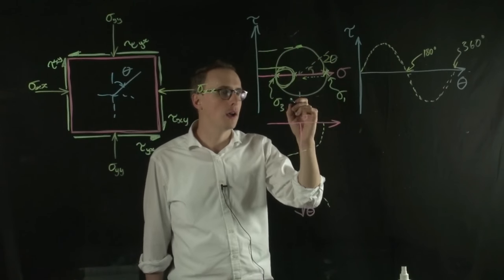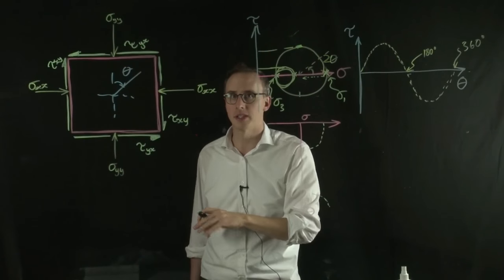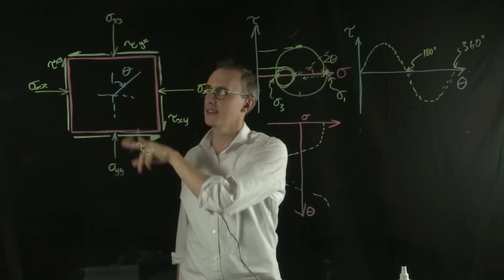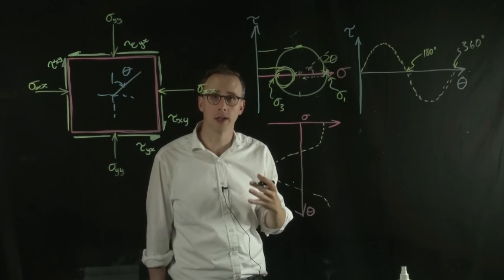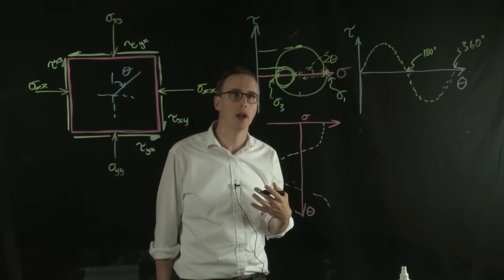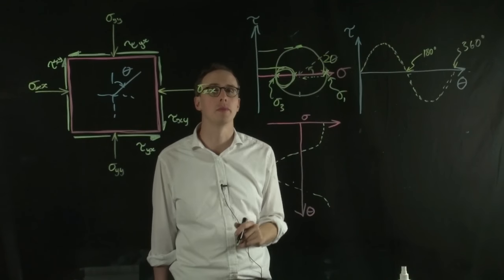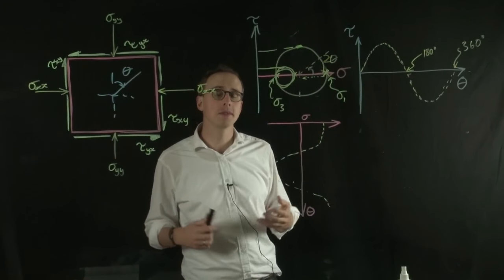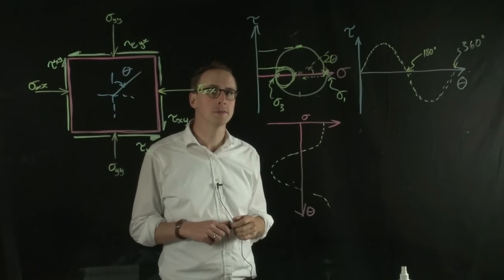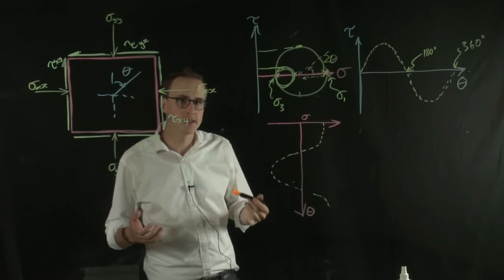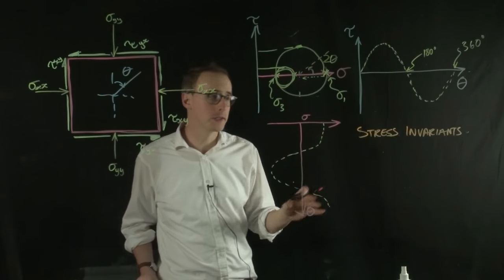σ₂ becomes important when we're thinking about three dimensions. At the moment we only have two dimensions in this convention; if we think about the zz direction going in and out of the board, that's what σ₂ is — it's called the intermediate principal stress. We only need two parameters to describe a Mohr's circle: where the center point of the circle is, and what the radius of the circle is. These two parameters are called two-dimensional stress invariants.